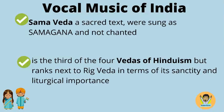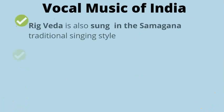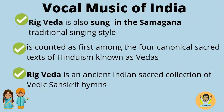The Sama Veda, a sacred text, were sung as Samagana and not chanted. It is the third of the four Vedas of Hinduism but ranks next to the Rig Veda in terms of its sanctity and liturgical importance. The Rig Veda is also sung in the Samagana traditional singing style and is counted as first among the four canonical sacred texts of Hinduism known as the Vedas. The Rig Veda is an ancient Indian sacred collection of Vedic Sanskrit hymns.